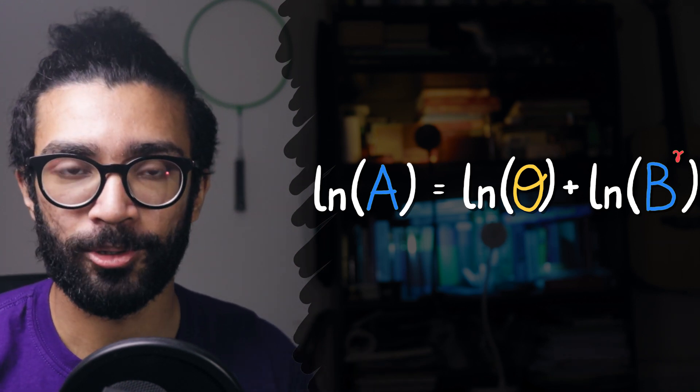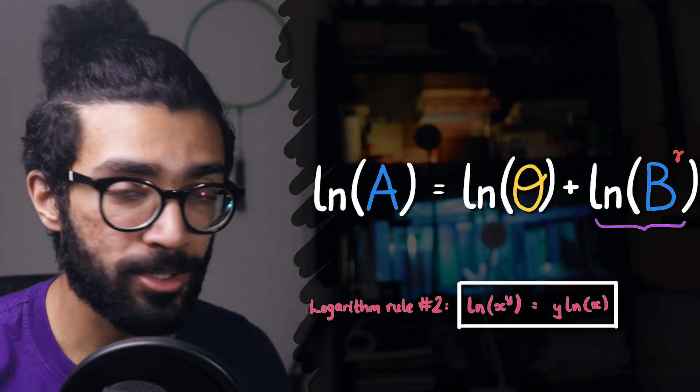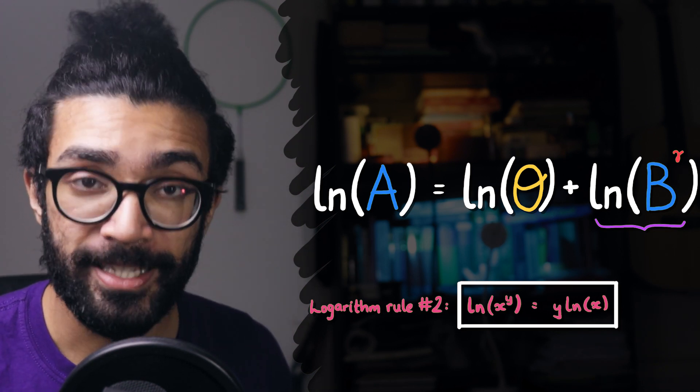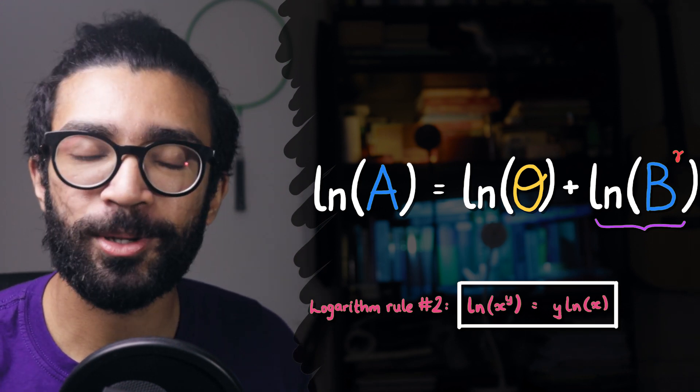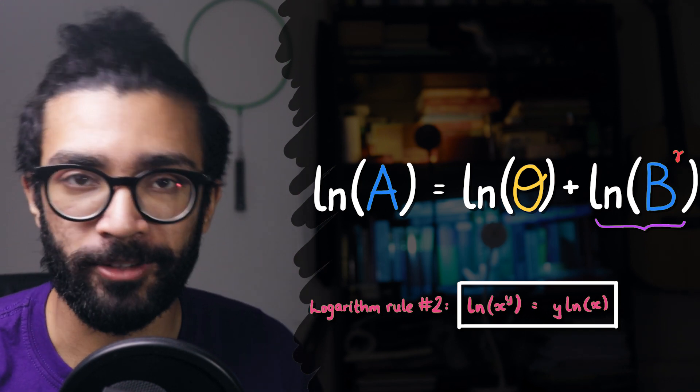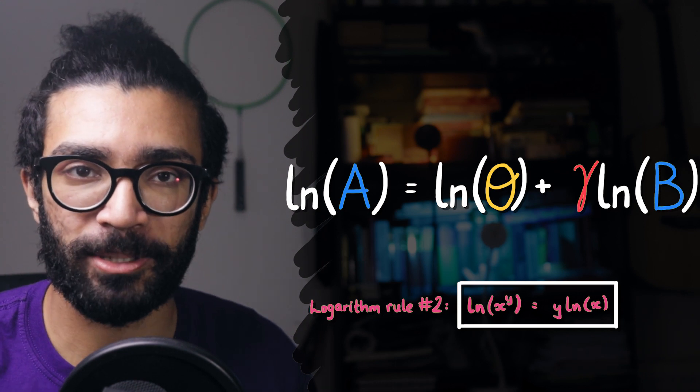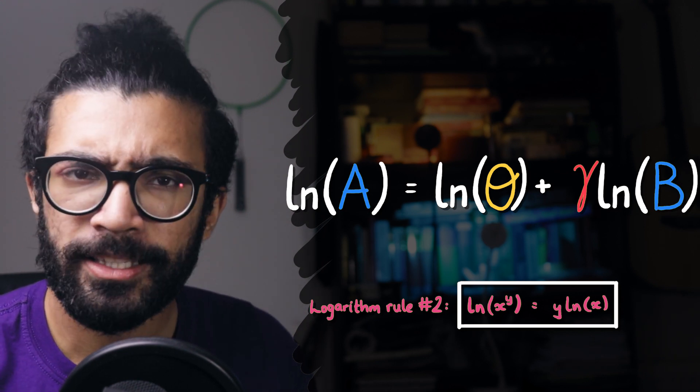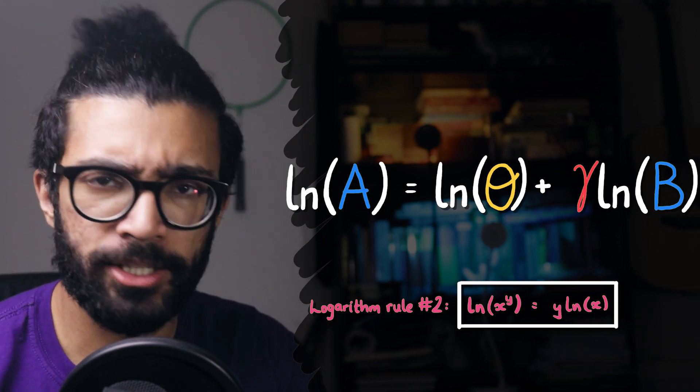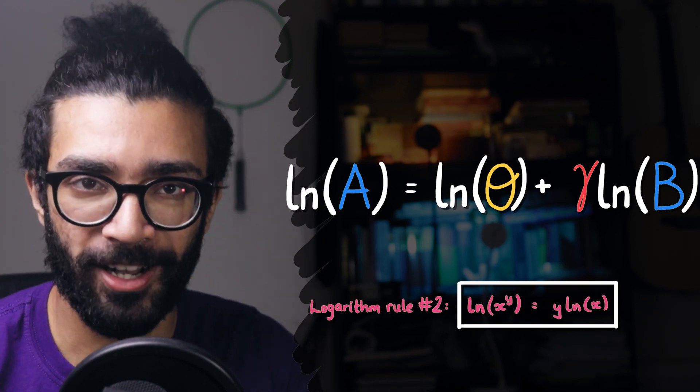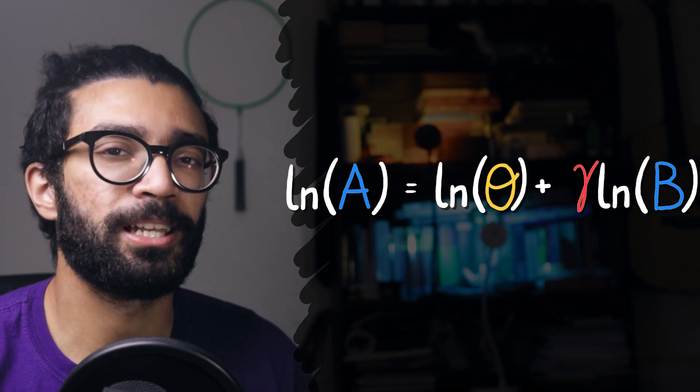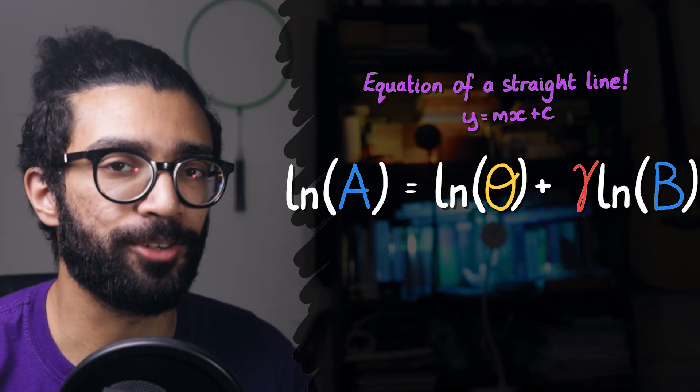Then we can remember another logarithm rule, which is that the logarithm of a quantity to some power is equal to that power multiplied by the log of that quantity, which means we can write the natural log of B to the power of gamma as gamma multiplied by the natural log of B. And at this point, we've done some mathematical manipulation. So what?